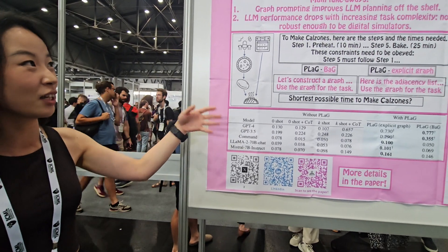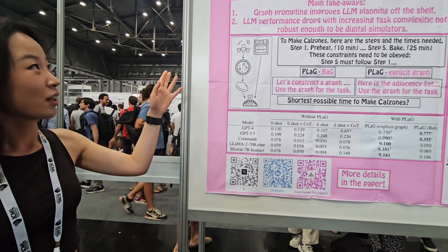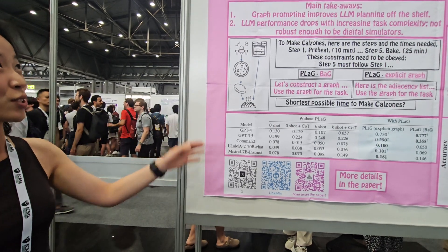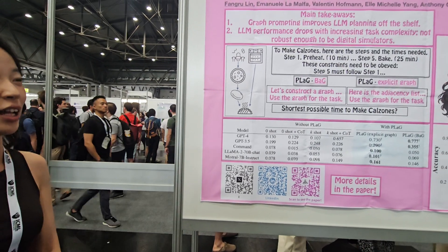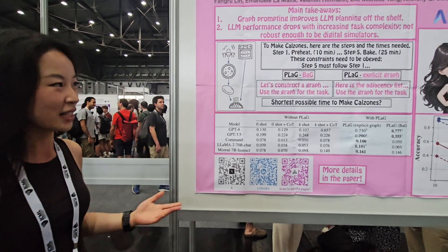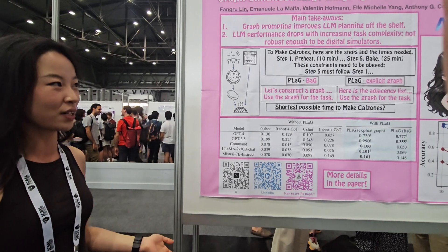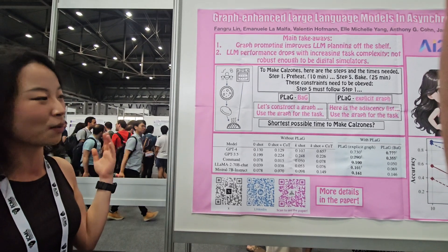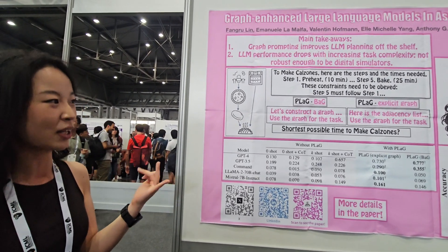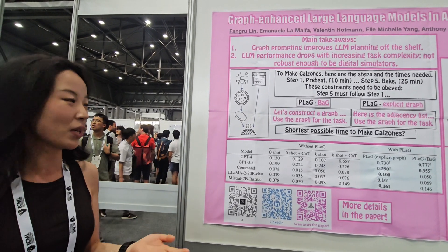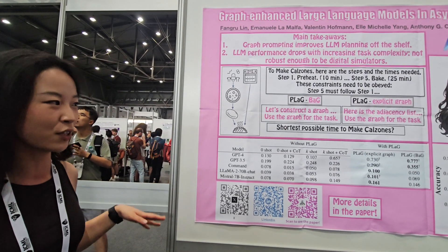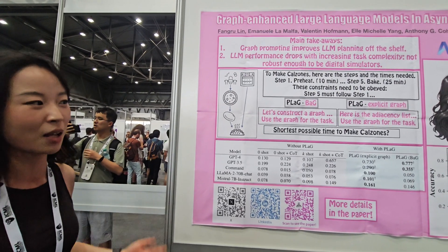Our task is basically benchmarking how well large language models can do in asynchronous planning. For example, say you want to make breakfast — you want to make a coffee, fry an egg, and make a toast. Maybe the best strategy is to do these different steps at the same time.